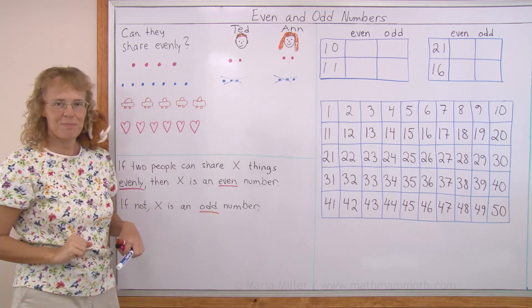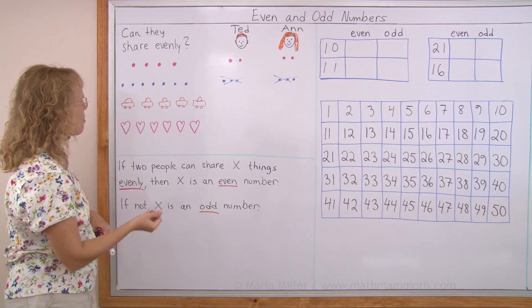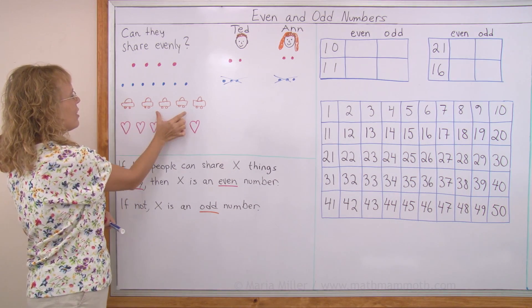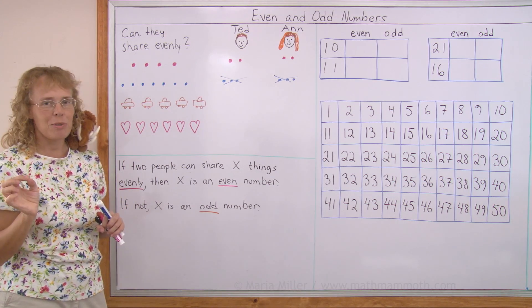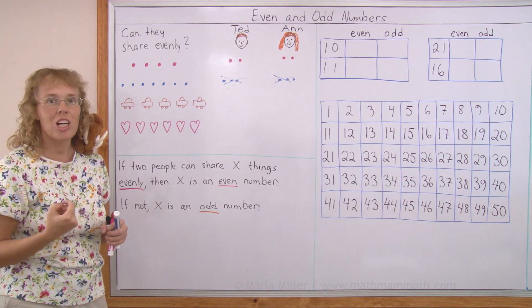How about five cars? The same thing happens. I could give two to Ted, two to Ann, and one would be left over. So, five is not an even number. We say it is an odd number.